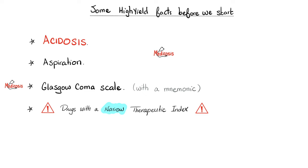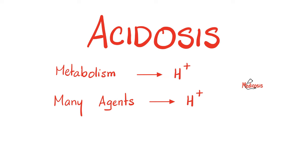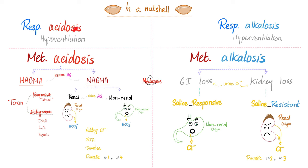Many toxidromes cause acidosis. If you recall from physiology, acidosis inhibits synaptic transmission — the neuron is unable to talk to the next neuron, and the patient will be tired, drowsy, obtunded, or somnolent. Aspiration is evil — protect your patient from aspiration. The Glasgow Coma Scale is important, and you need to know the medications with a narrow therapeutic window. Acid-base imbalances include respiratory acidosis, respiratory alkalosis, metabolic acidosis, and metabolic alkalosis. Metabolic acidosis is divided into high anion gap (HAGMA) or normal anion gap (NAGMA) metabolic acidosis. Metabolic alkalosis is divided into saline-responsive and saline-resistant.